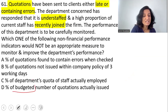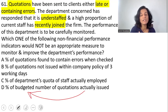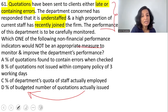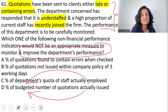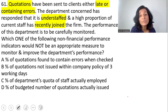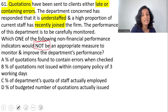Option D: percentage of budgeted number of quotations actually issued. Comparing actuals with budgets tells us whether the department met its targets, but that is not the problem existing in this department. Simply comparing actuals to budgets will not help improve performance here, so this is NOT a good performance measure. The question asks which is not appropriate, so the right answer is option D.